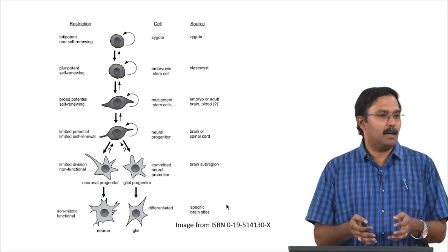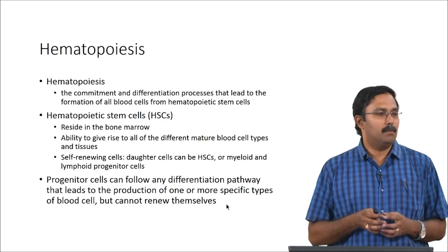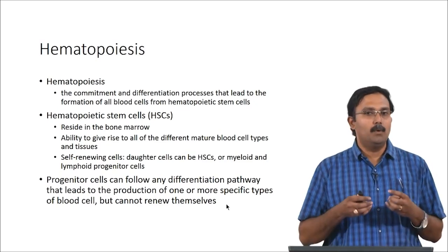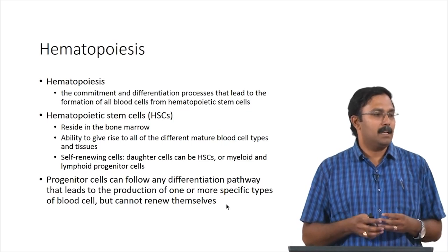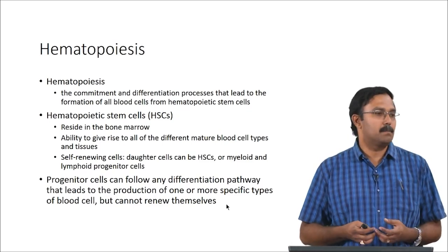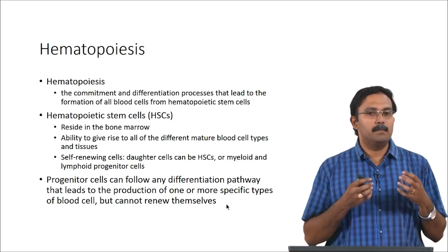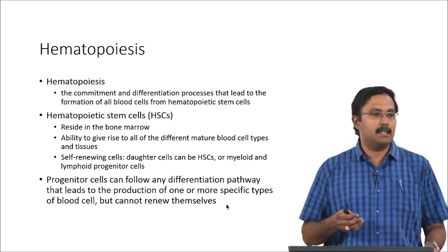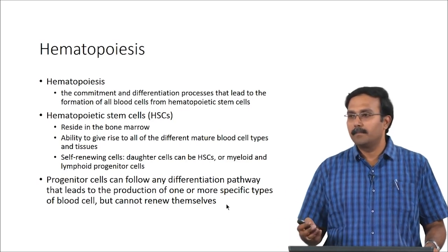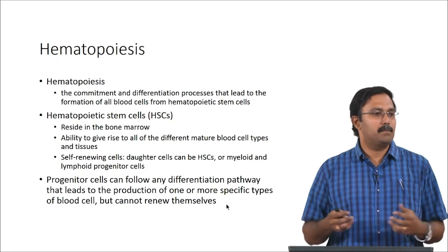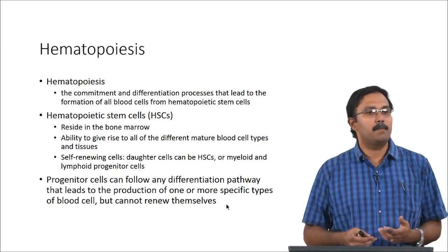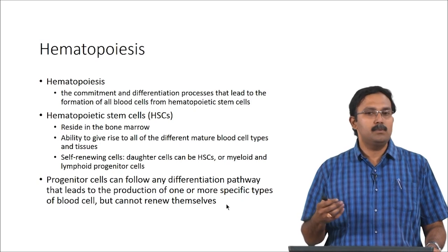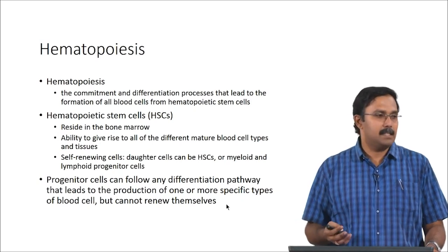This is how a general process would look like. I will talk about a couple of things which are very popular when we discuss stem cells and cell differentiation. One process which is very well studied and established is the hematopoietic stem cell process — hematopoiesis. Hematopoiesis is basically the process where hematopoietic stem cells commit and differentiate to form different blood cells. These reside inside the bone marrow and have the ability to give rise to various types of mature blood cells and tissues.